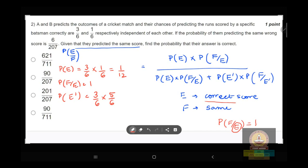See, probability of A predicting a wrong answer would be 3/6 and probability of B predicting a wrong answer would be 5/6, okay, so 15/36.